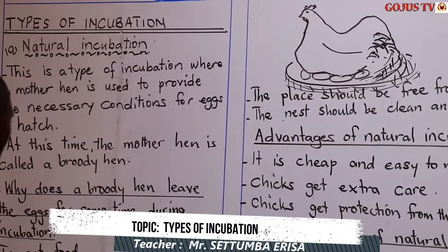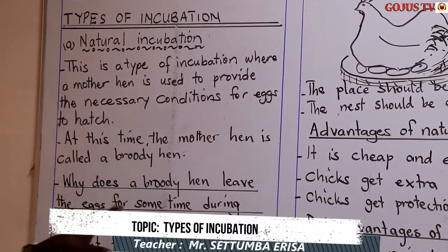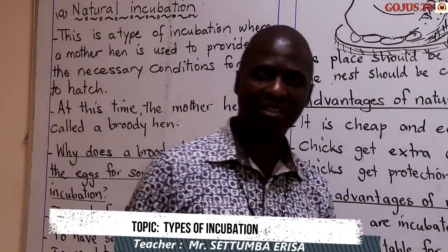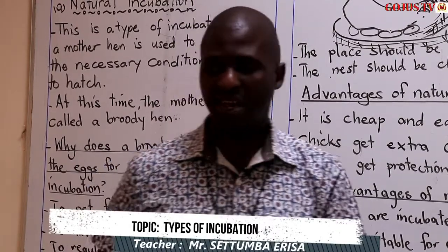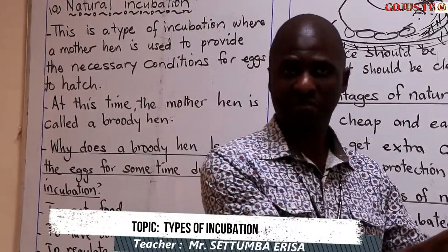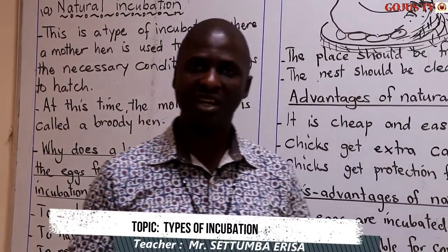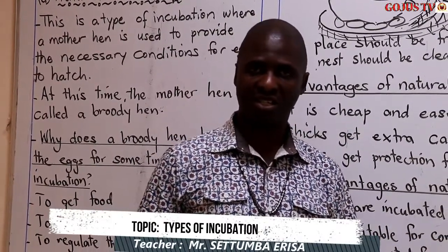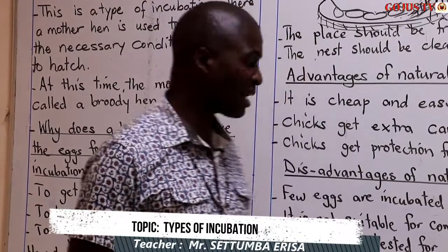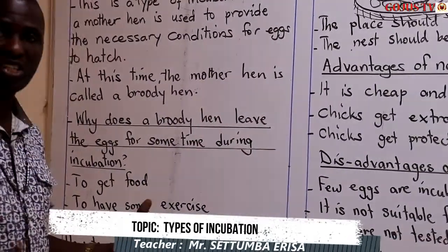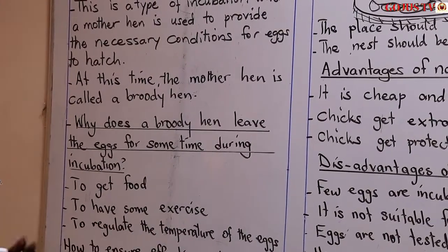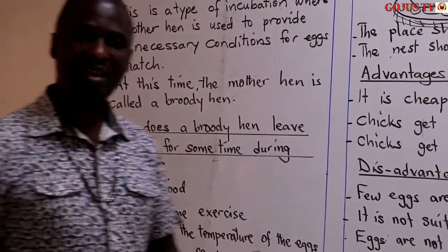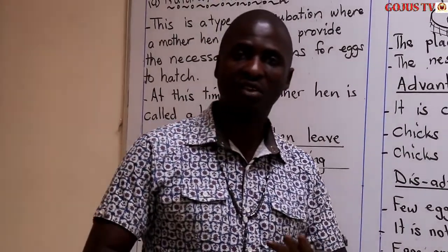Why does a broody hen leave the eggs for some time during incubation? This is a time when the hen leaves the eggs, abandons the eggs, and moves out for something like 15 to 20 minutes. It comes out naturally because a hen needs to feed — it gets out to get something to eat. Number two, it gets out to give some space for the eggs to get some fresh air. It also gets out to get some body exercise. So these things happen naturally; a hen is not supposed to sit on the eggs all the time.